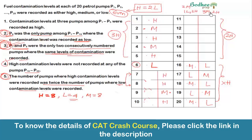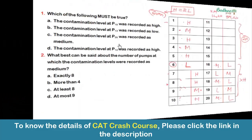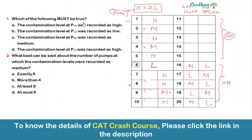Now let's address Question 1: which of the following must be true? Option A says the contamination level at P10 was recorded as high. In Case 2, which is the only valid case, P10 is indeed H, and this is unambiguous. So Option A is the correct answer.